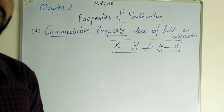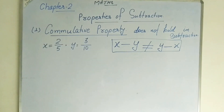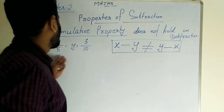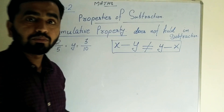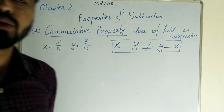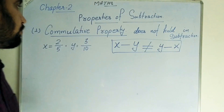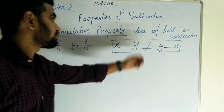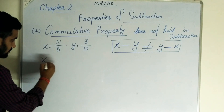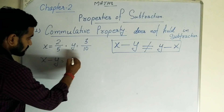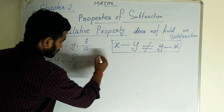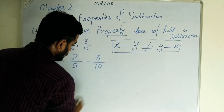Now take one example. Suppose that x is equal to 2 by 5 and y is equal to 3 by 10. Find out x minus y. x minus y means 2 by 5 minus 3 by 10.